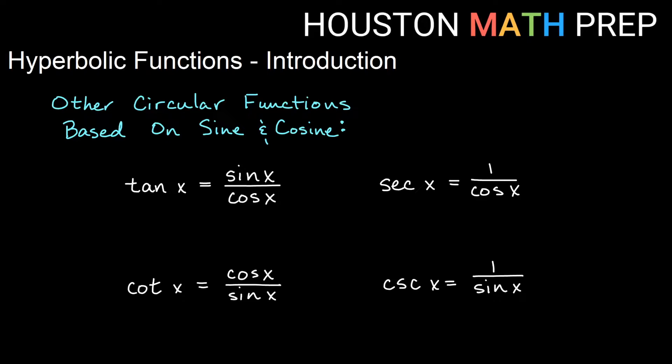We have lots of other circular functions that are based on sine and cosine. We have the tangent of something, which is the sine of that something divided by the cosine of that something. We have the cotangent, which is the reciprocal of that, the cosine divided by the sine of that thing. And then we have the reciprocal functions. We have secant of x, which is the reciprocal of the cosine function, and we have cosecant, which is the reciprocal of the sine function.